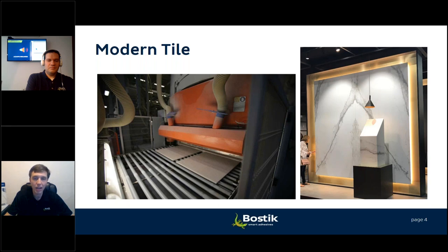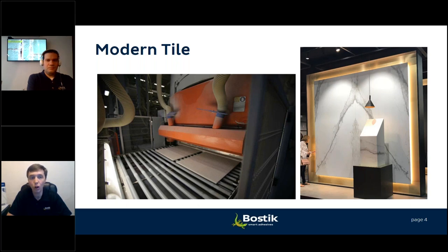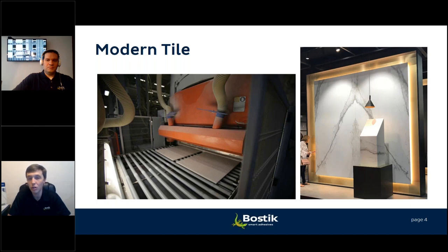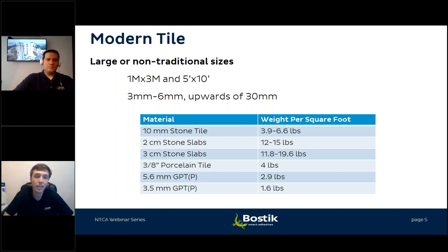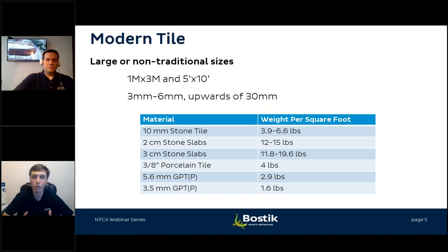Gauged porcelain tile panels are made differently from traditional dust-pressed tiles — a manufacturing process that produces more positive results, less embodied stress, and the ability to create larger size formats. Traditional tiles might be under 18 inches; these panels can be one meter by three meters (roughly five by ten feet). Thicknesses range from three millimeters up to 30 millimeters, driving a variety of new installation products.